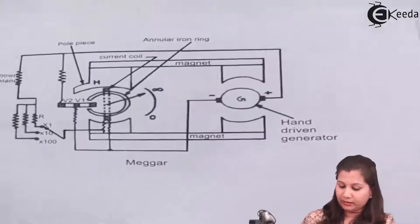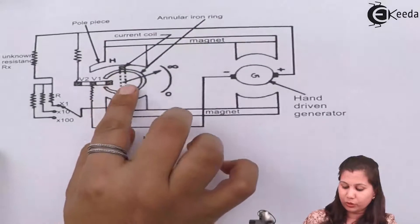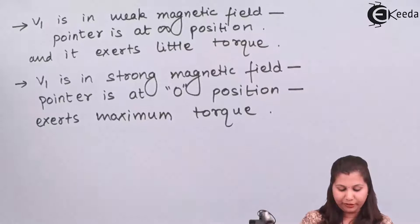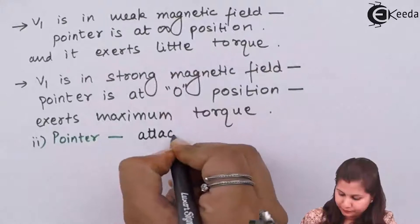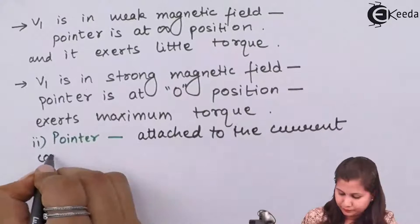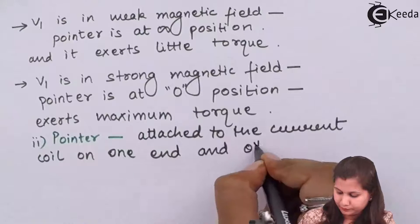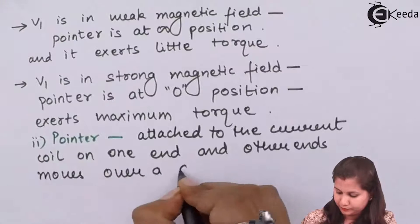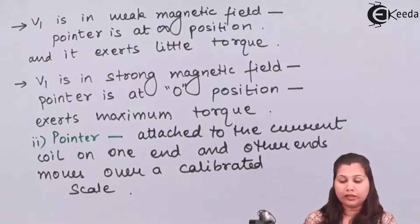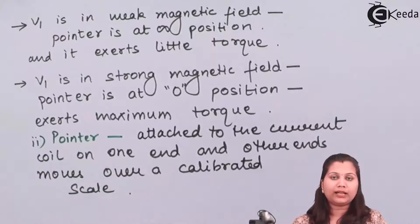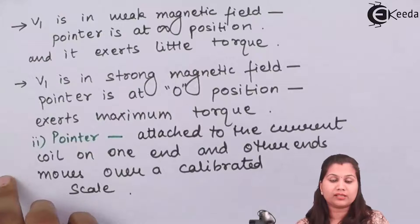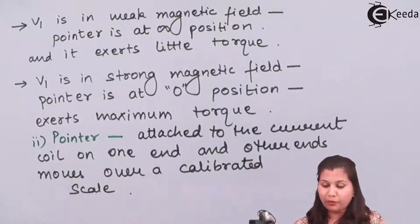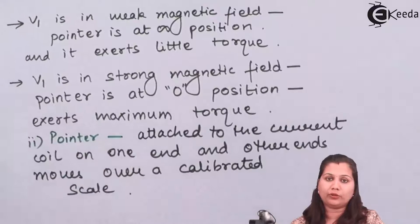The current coil is in the vertical position and through the current coil the pointer is attached. The second component of the Megger is the pointer. One end of the pointer is attached to the current coil and the other end moves over the calibrated scale which has divisions from zero to infinity. Since this is a calibrated scale we can directly read the value of the resistance being measured, so the pointer directly indicates the value of the unknown resistance.